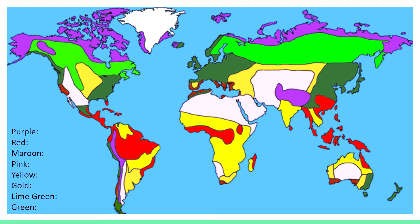Now let's see what we can actually remember. There will be a multiple choice question after each color is said — give yourself time to think and then see if you were right. Purple is tundra. Red is tropical rainforest. Maroon is chaparral, which you can see mostly in California, the Mediterranean Sea, a little bit in South Africa, and Australia. The pink is desert. Yellow is tropical savanna. Gold is temperate grassland.